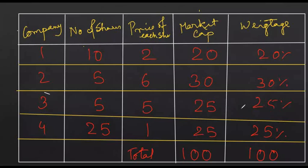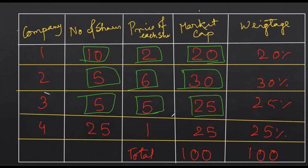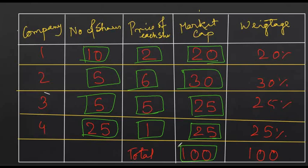For example, suppose there are 4 companies. Company 1 has sold shares with a market capitalization of Rs 20. Company 2 has a market capitalization of Rs 30. Company 3 has a market capitalization of Rs 25. Company 4 also has a market capitalization of Rs 20. If we add all the market capitalizations of all 4 companies, we get a total sum of Rs 100.